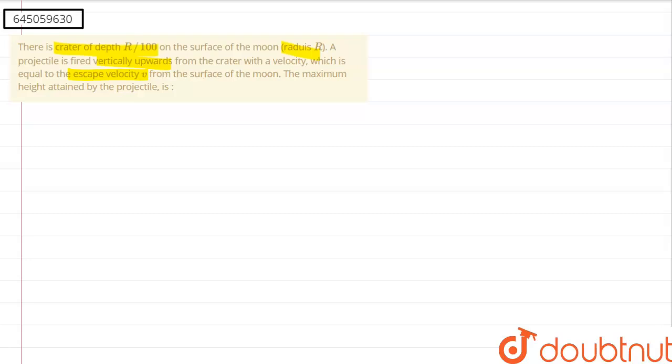Let us start with making the diagram first. Now that we have our diagram, this is the center of moon and it is said that the crater is of depth r by 100 and this is our surface of the moon.